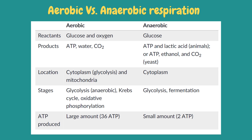To summarize, aerobic respiration uses glucose and oxygen as reactants, while anaerobic respiration uses only glucose. Aerobic respiration produces ATP, water, and carbon dioxide, while anaerobic respiration produces ATP and lactic acid in animals, or ATP, ethanol, and carbon dioxide in yeast. Aerobic respiration starts in the cytoplasm for glycolysis and continues in the mitochondria for the remaining stages, while anaerobic respiration occurs only in the cytoplasm. Aerobic respiration includes glycolysis, Krebs cycle, and oxidative phosphorylation, while anaerobic respiration involves only glycolysis and fermentation. Aerobic respiration produces 36 ATP, while anaerobic respiration produces only 2 ATP.